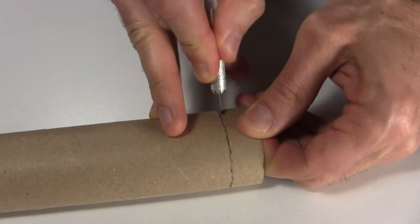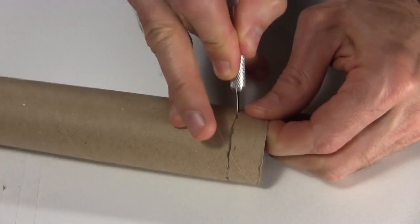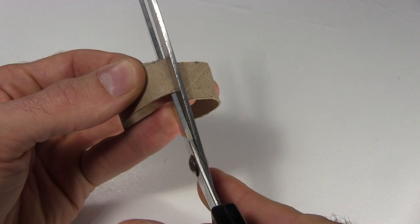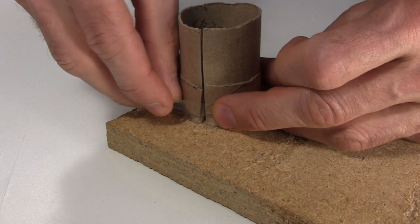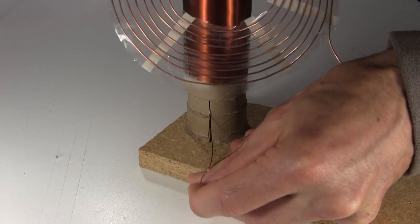I cut another length of paper towel roll, that's high enough to lift the secondary coil up that high, and with a slot in it for the secondary coil's wire in the back. I put it in place, and add a little tape near the bottom. A quick test shows it works well.